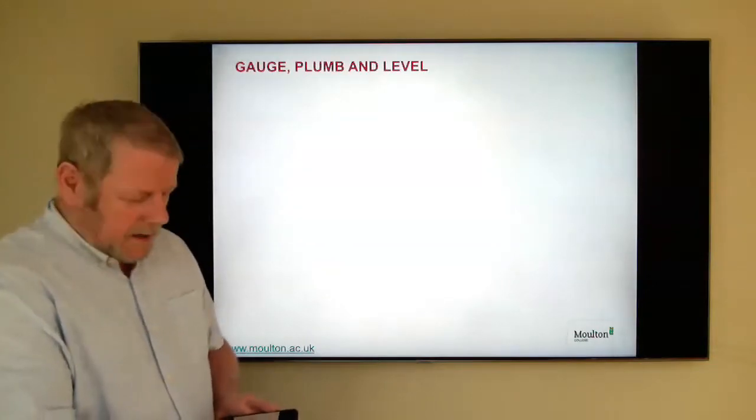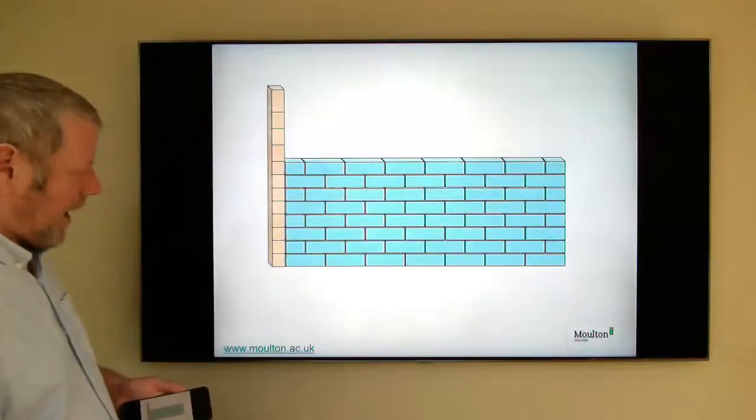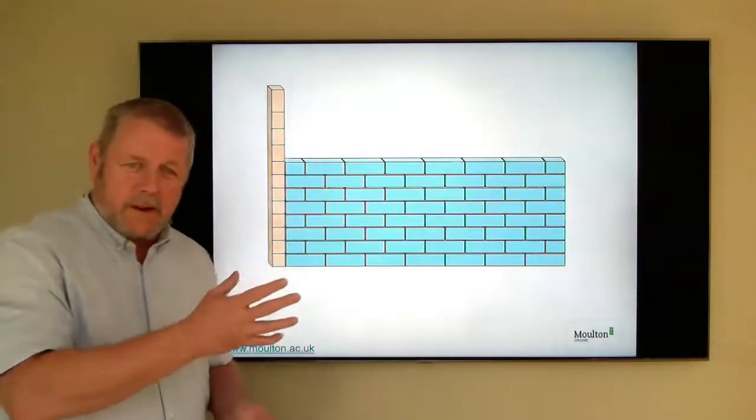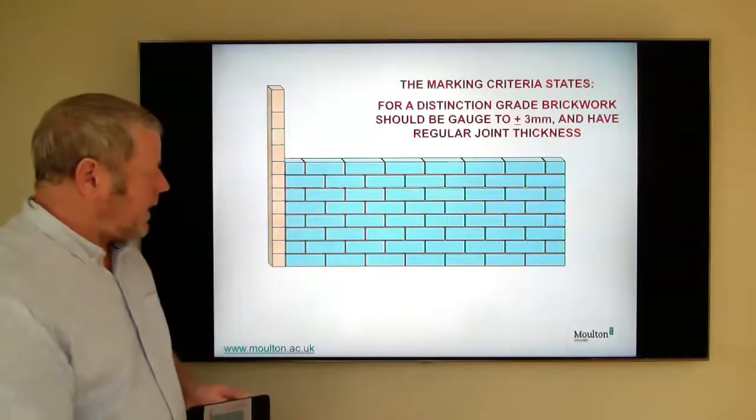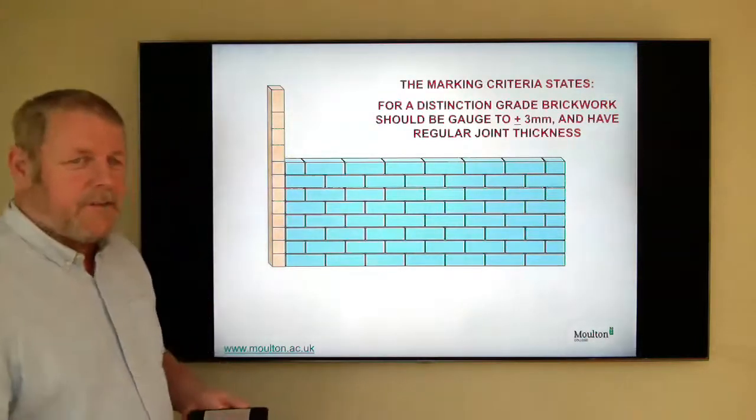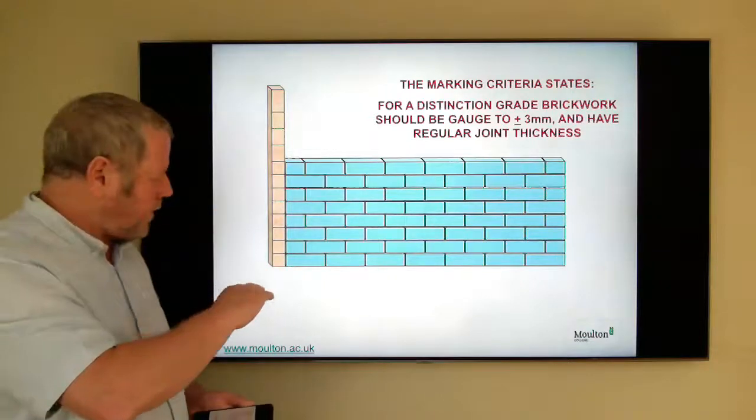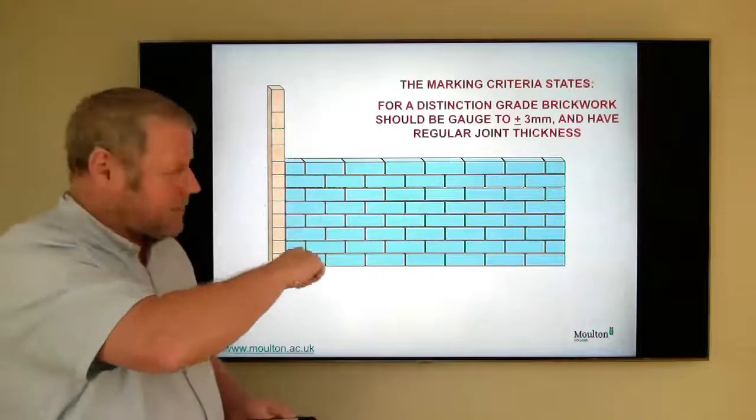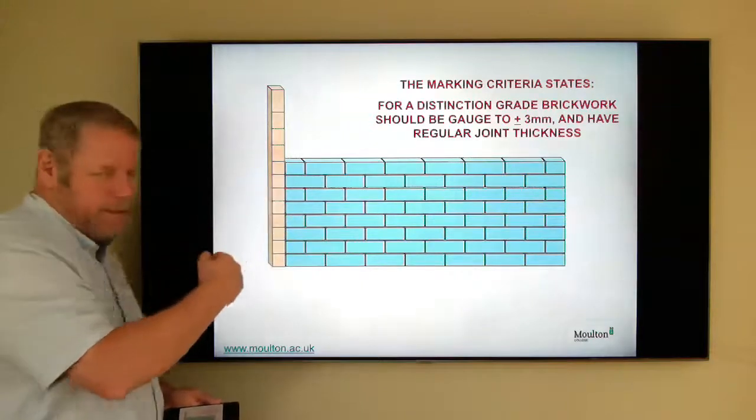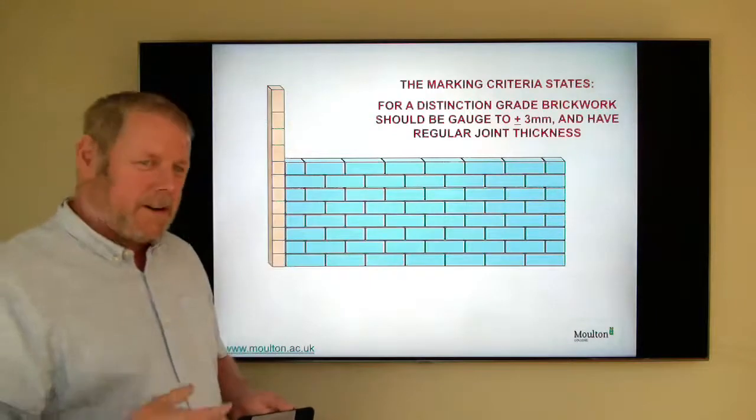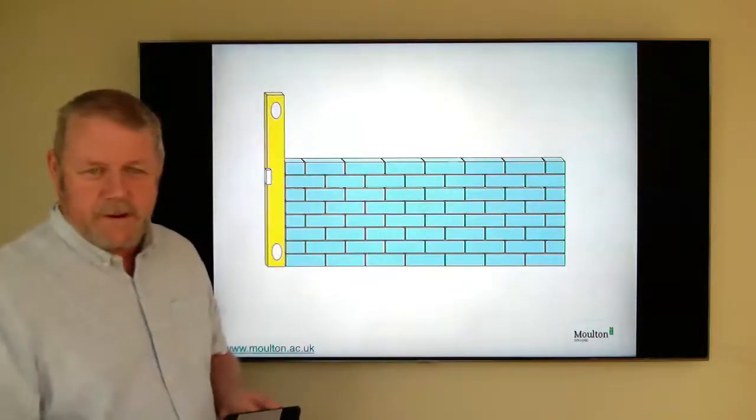We now look at gauge, plumb and level. So again, there's our wall. And there's our gauge lat. Much the same, we can use a gauge lat, we can use a tape measure, either or. But the tolerance, if you wish to achieve a distinction in your height of your wall, is again, plus or minus three millimetres. And the joints must be regular thickness. So you can't have a 15 millimetre joint somewhere in there and the rest at 10. What we're looking for, and then just a tight one on the top, of course, five millimetres to get you back to the gauge at the finished wall height. What we're looking for is each of these is a regular size and you're within three millimetres. Again, there's a slightly larger tolerance for the merit, and a slightly larger tolerance for the pass. But you'll get the idea that, you know, what you need to achieve for a distinction.